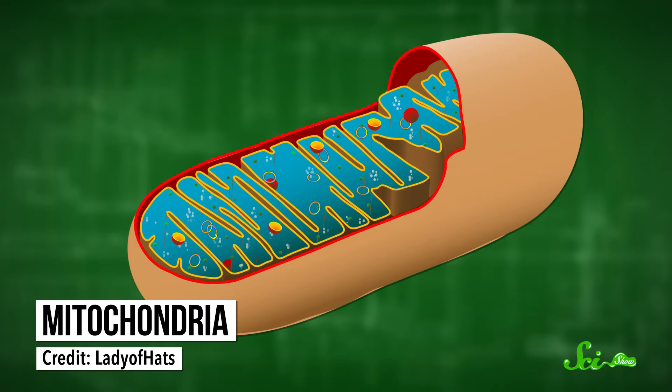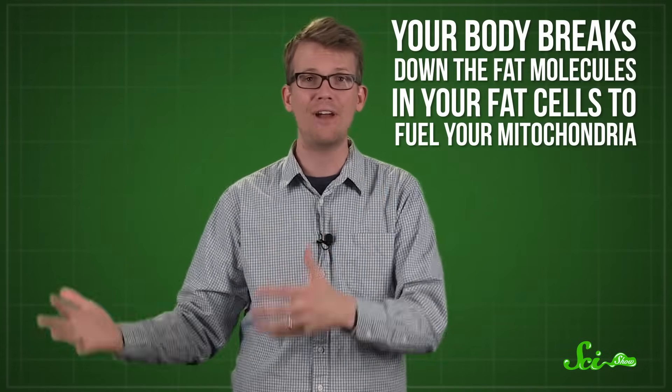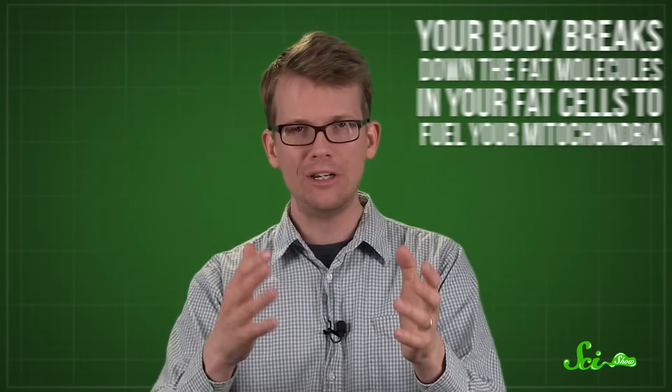And when your circadian clock says it's time to burn fuel, it activates a protein in your body called Reverb Alpha. This protein works by boosting the number of mitochondria in your cells. Mitochondria are like your cell's power plants. They take in fuel and turn it into energy that your body can use.